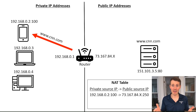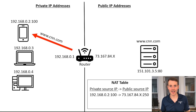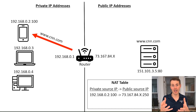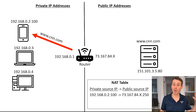A good analogy for your router is like a receptionist at a doctor's office. Customers in the waiting room — representing the public internet — communicate directly with the receptionist, who then communicates with the doctors in the back. Your router serves as a receptionist, acting as the middleman between the public internet and the private IP addresses in your home network.